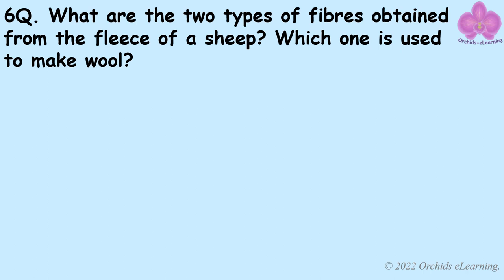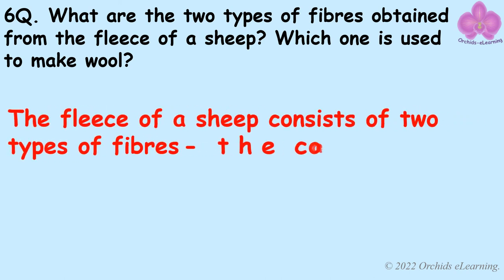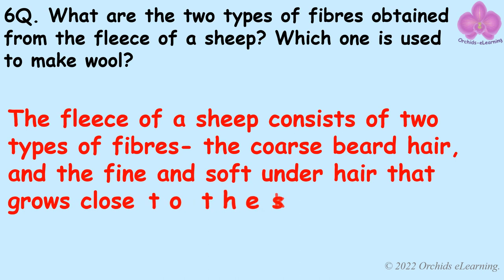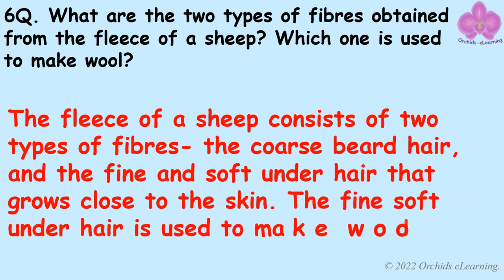What are the two types of fibers obtained from the fleece of a sheep, and which one is used to make wool? The fleece of a sheep consists of two types of fibers: the coarse beard hair, and the fine and soft under hair that grows close to the skin. The fine soft under hair is used to make wool.